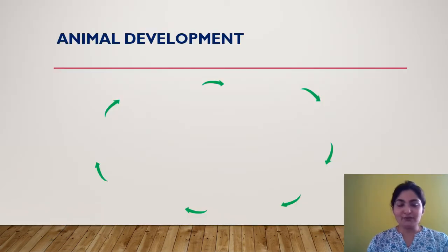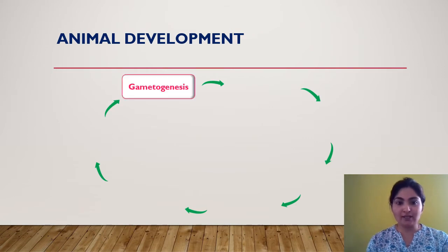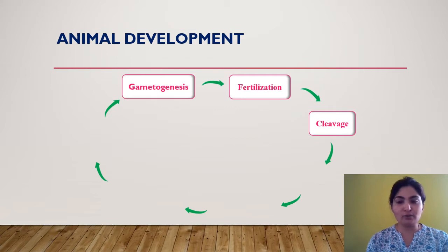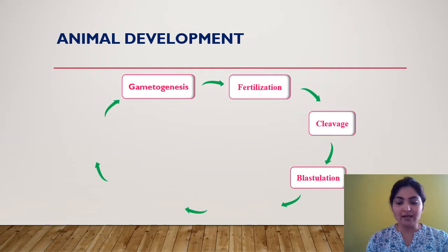Before we start with gastrulation, let us first understand how animal development takes place and in what stages. The first stage is gametogenesis, where male and female gametes are formed. In the next step, fertilization, these gametes fuse to form a single cell called the zygote. In cleavage, the single cell zygote undergoes mitotic divisions to form a number of cells, which are arranged in a specific manner to form a blastula.